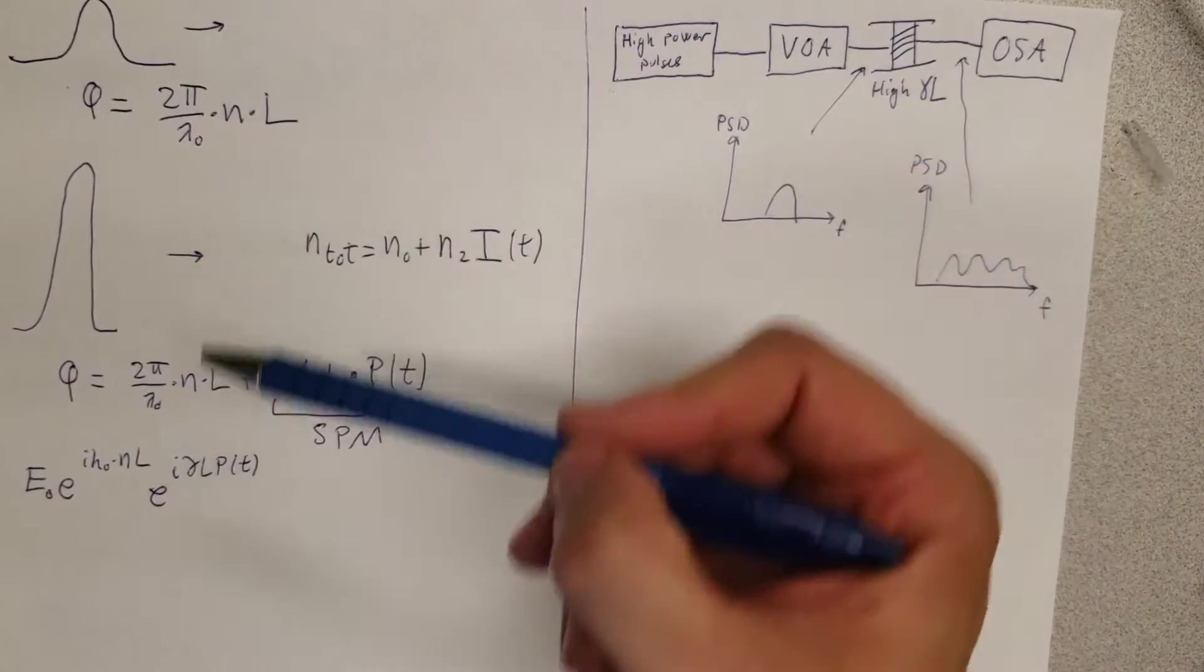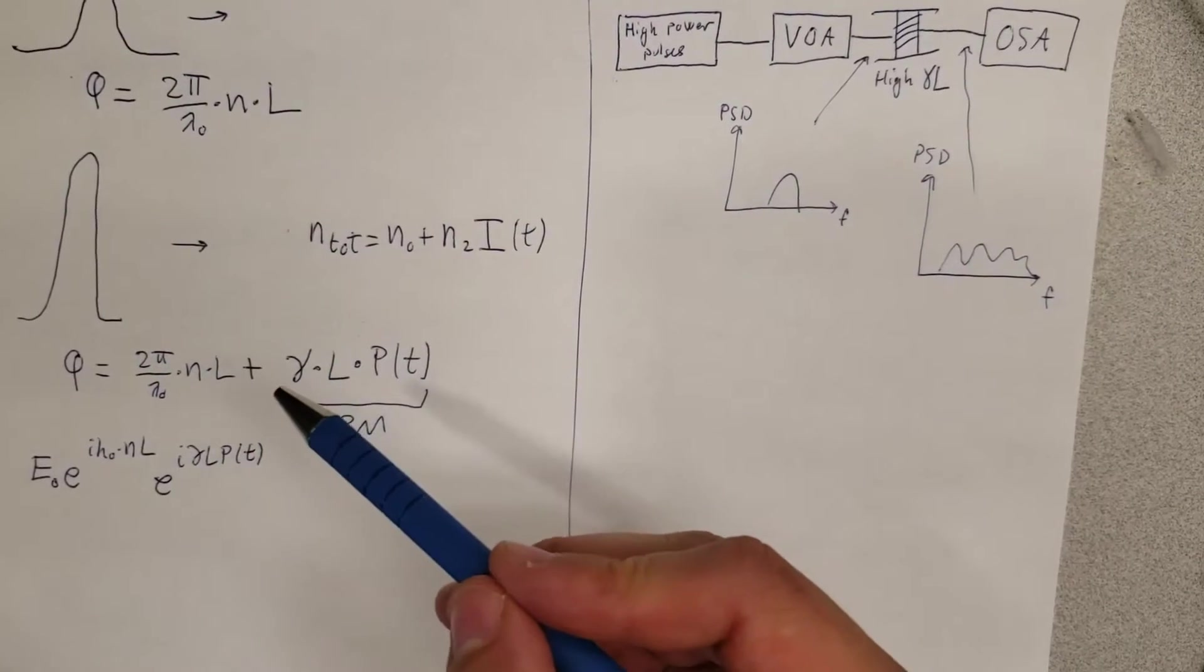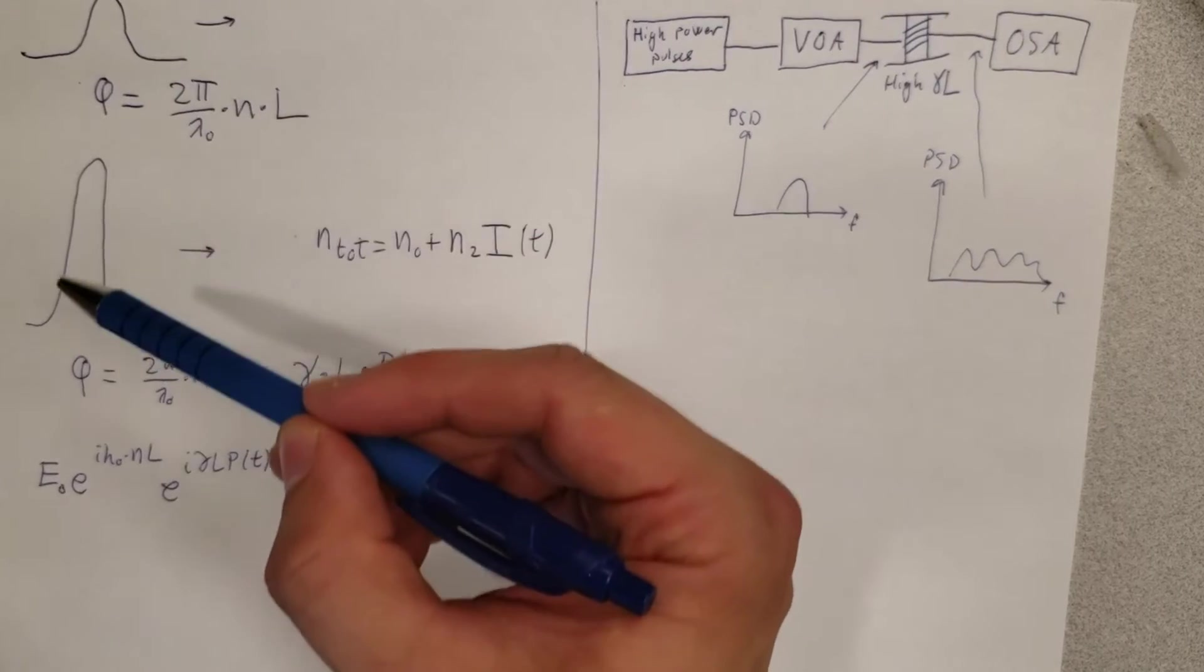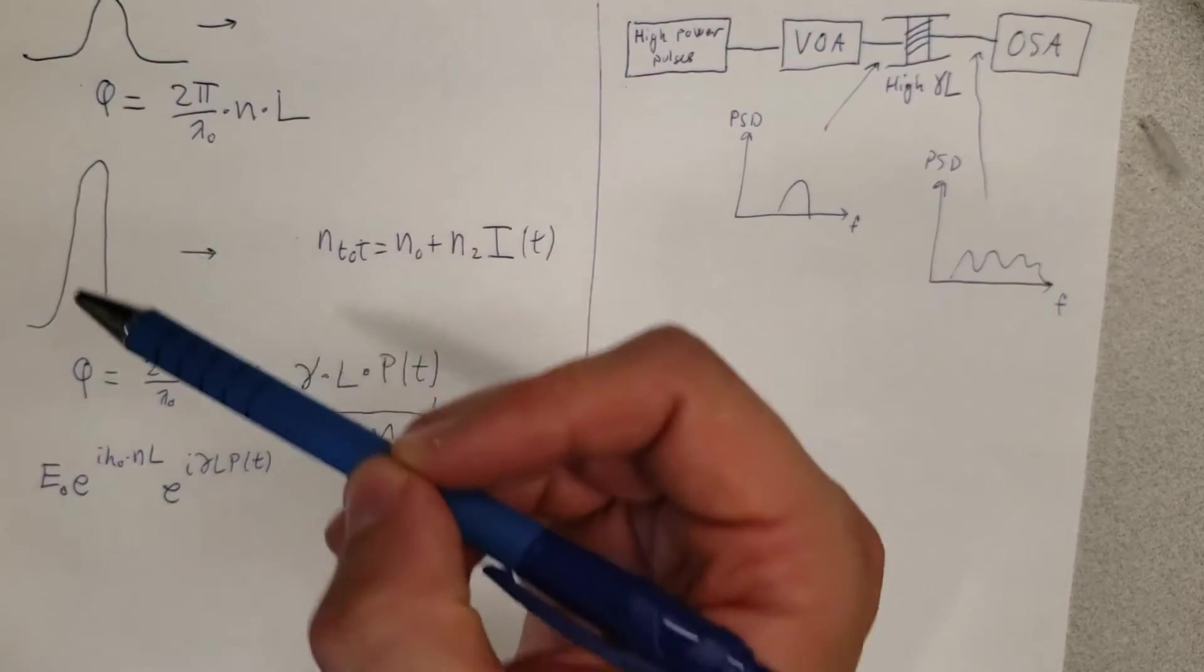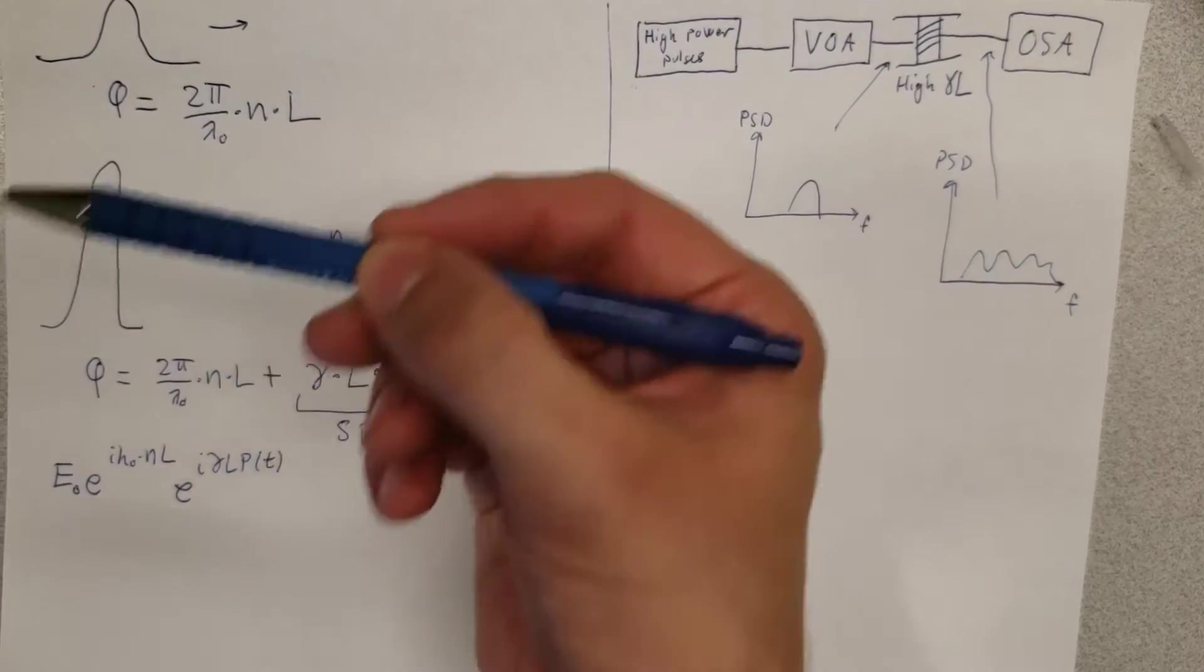Go check that out for the whole calculation I showed there. But essentially the idea is that you have a very high power pulse and also an optical fiber with a very strong non-linearity, then we get a phase modulation that depends on the power of the pulse locally. And because the power of the pulse changes locally, then we get a change in the phase over time, which is equivalent to a change in the frequency.